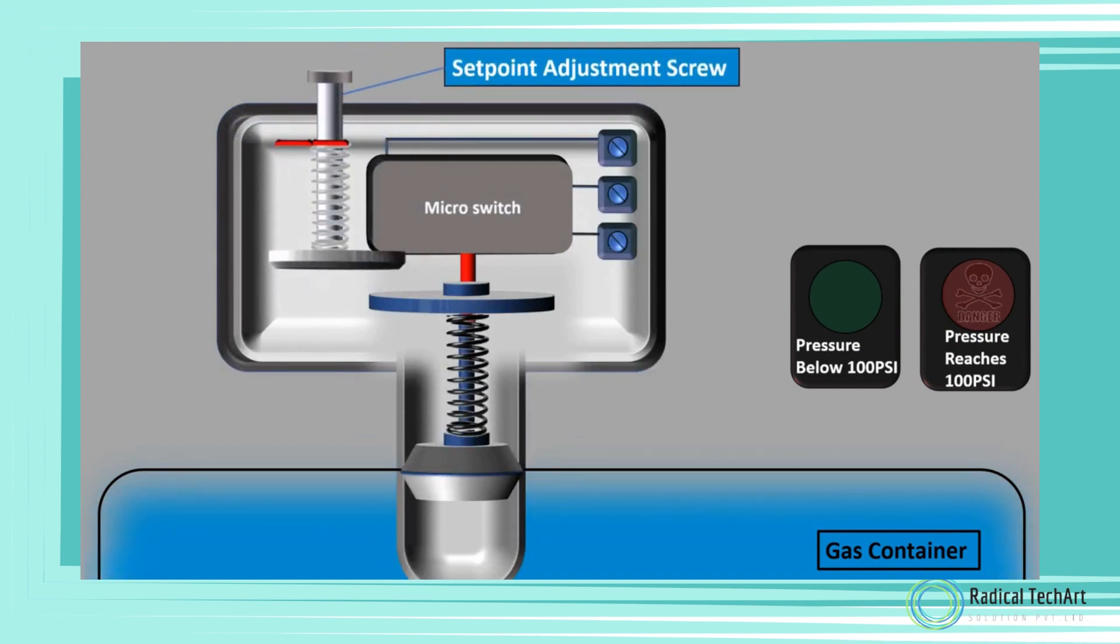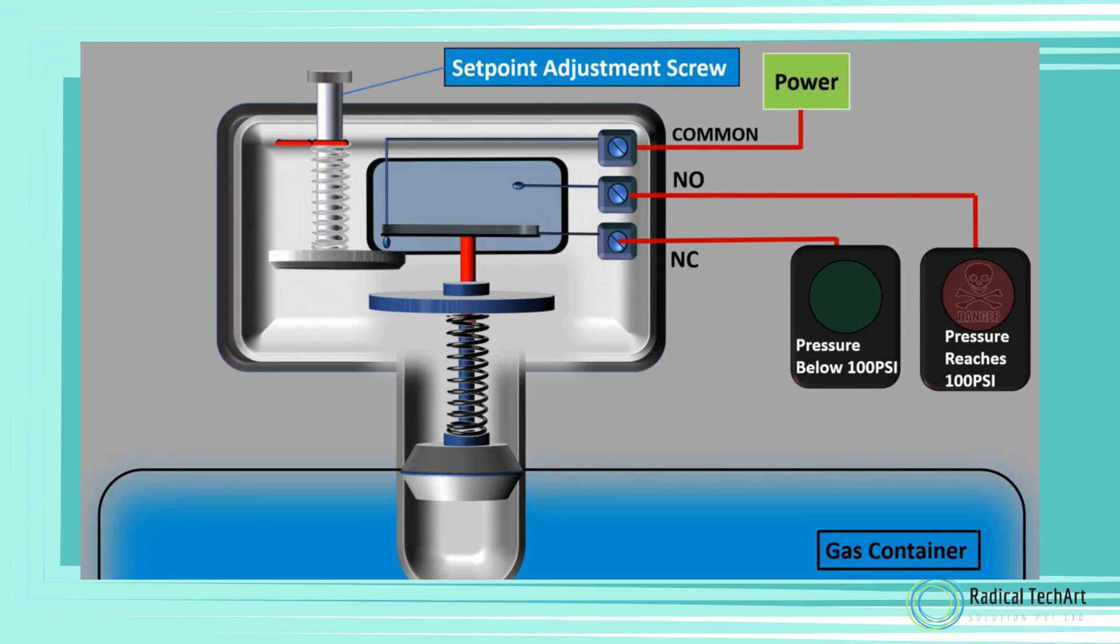Now we wire the green light to normally closed (NC) terminal of the switch and red light to the normally open (NO) terminal of the pressure switch. Power is connected to the common terminal of the switch.